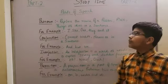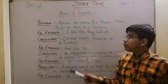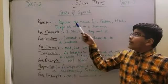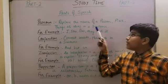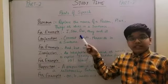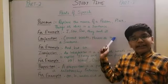Hi guys, welcome to study time. Aaj hum karayake parts of speech, Part no. 2, pronoun. Replace the name of a person, place, thing or ideas in a sentence. For example, I, she, we, they and it.